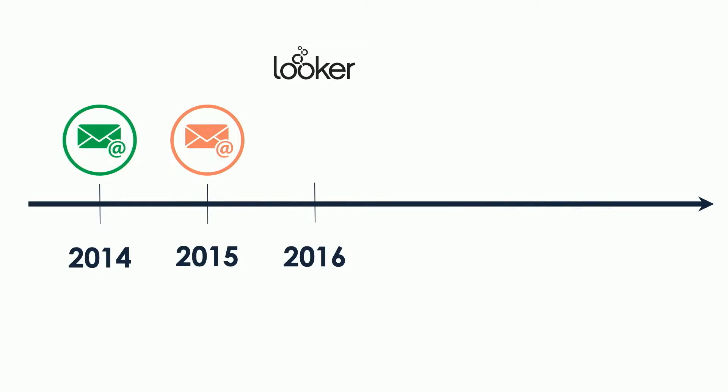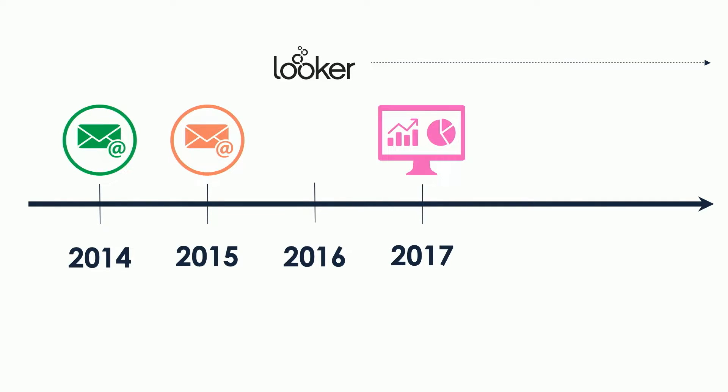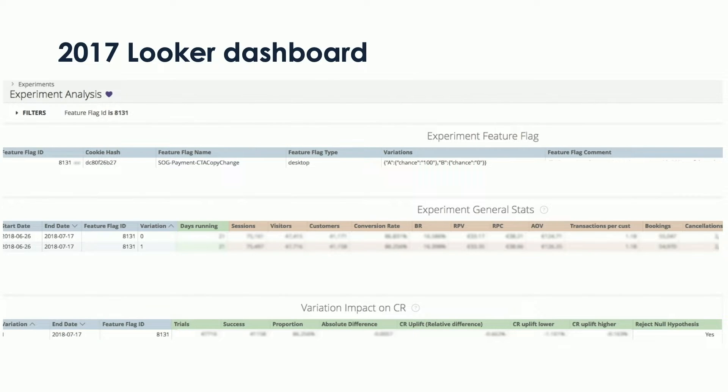The winds of change came around 2016 when we introduced Looker, and we've been using it ever since. In 2017, we built our first A-B testing dashboard with Looker. It was a huge success — teams loved it. It was interactive, and they were able to monitor more metrics, for instance revenue per visitor, bounce rate, and so on.